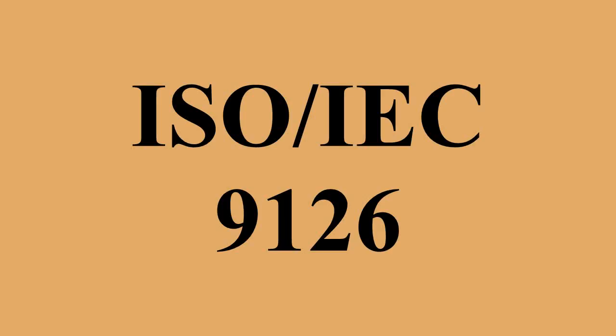ISO IEC then started work on SQuaRE, a more extensive series of standards to replace ISO IEC 9126, with numbers of the form ISO IEC 250xx. For instance, ISO IEC 25000 was issued in 2005, and ISO IEC 25010, which supersedes ISO IEC 9126-1, was issued in March 2011. ISO 25010 has 8 product quality characteristics and 31 sub-characteristics. Functionality is renamed Functional Suitability; Functional Completeness is added as a sub-characteristic, and Interoperability and Security are moved elsewhere. Accuracy is renamed Functional Correctness, and Suitability is renamed Functional Appropriateness.